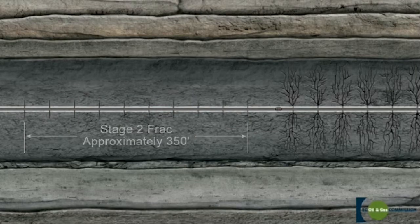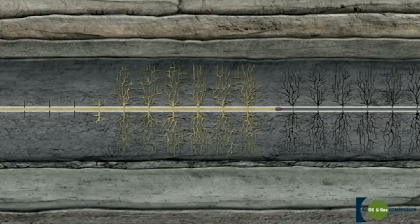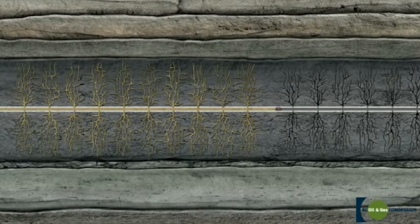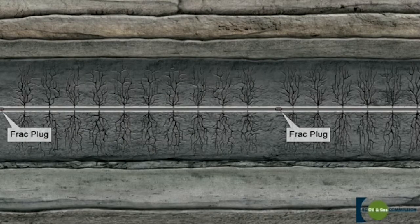Tight reservoirs do not contain natural fractures and therefore cannot be produced economically without hydraulic fracturing. The permeability is increased by providing pathways through which gas can flow more easily.